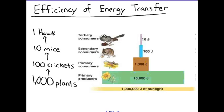This image should help you understand the 10% rule. At the bottom we have sunlight energy going to the producers. In this example, we have 1,000 plants. If only 10% is transferred on, the primary consumers would number 100. Of those 100 primary consumers — say 100 crickets — only 10% of that energy passes on, giving us 10 mice as secondary consumers. And if only 10% of those 10 mice is passed on to the next trophic level, that means we're only going to have one hawk at the top of the food chain.